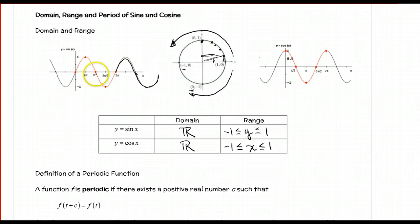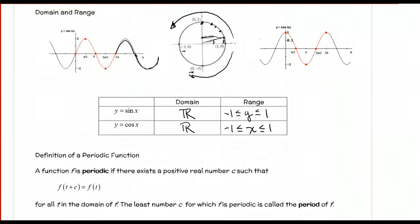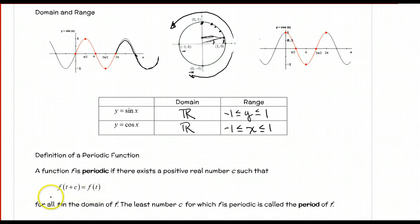This repeating manner of the graph means it's periodic. Definition of a periodic function: a function f is periodic if there exists a positive real number c such that f(t + c) = f(t) for all t in the domain of f. The least number c for which f is periodic is called the period of f.